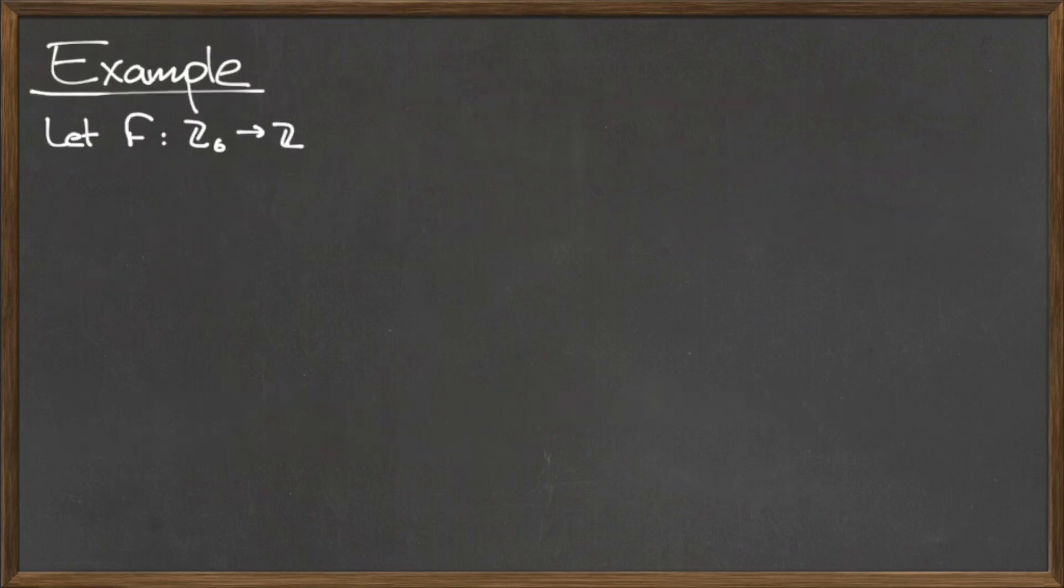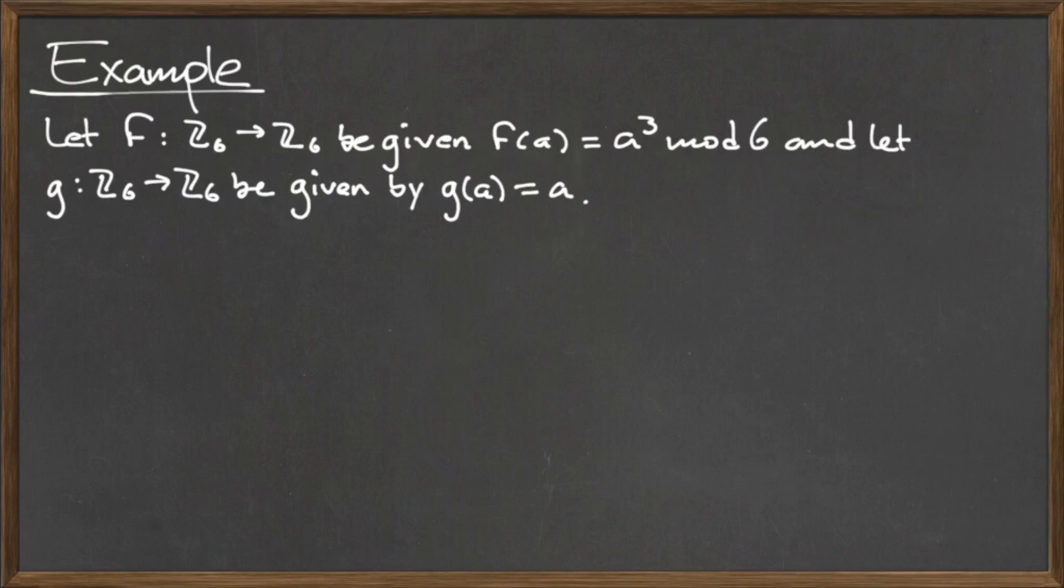For example, let f: Z₆ → Z₆ be given by f(a) = a³ mod 6, and let g: Z₆ → Z₆ be given by g(a) = a. Since the domain and codomains for both of these functions are the same, to determine if these two functions are equal or not, we need to compute the images for each value in the domain under both functions and then compare the results.